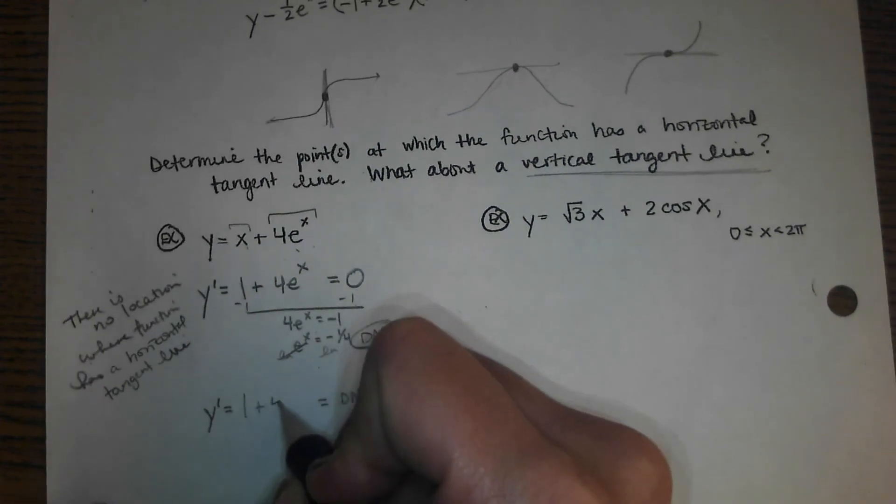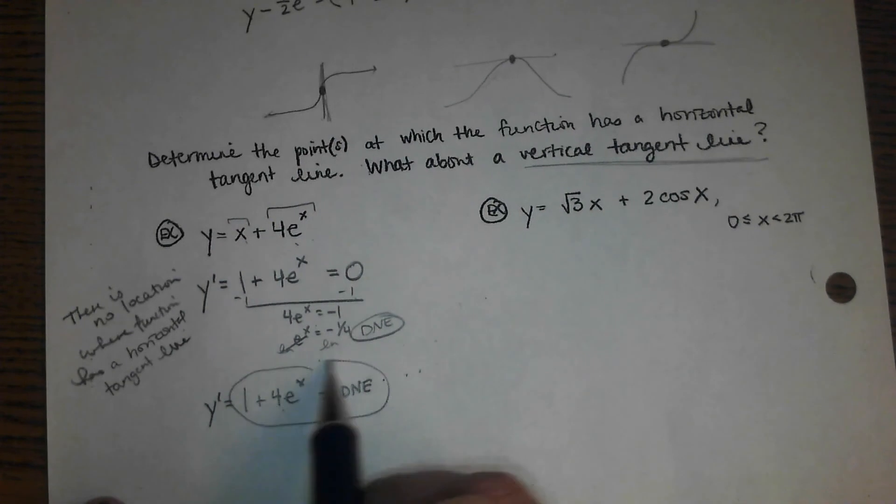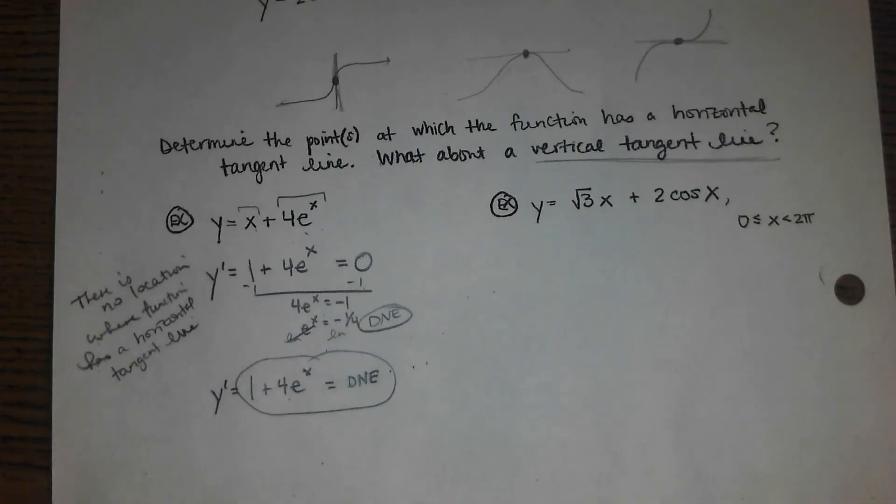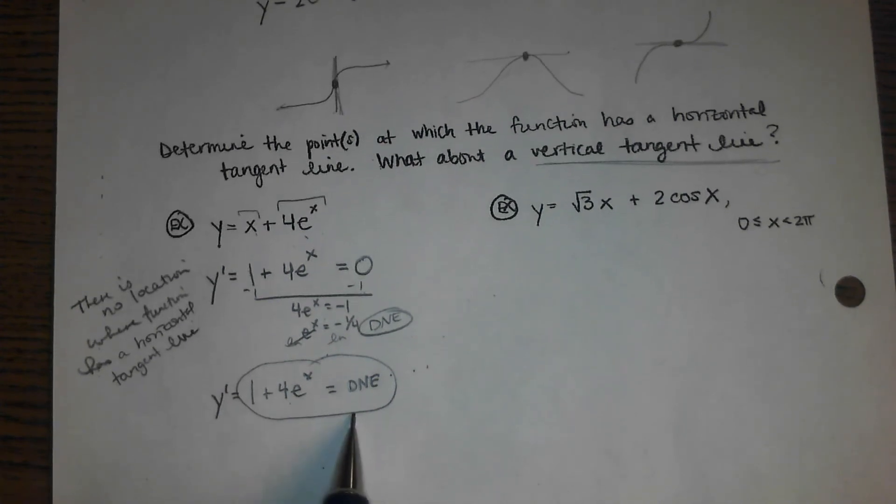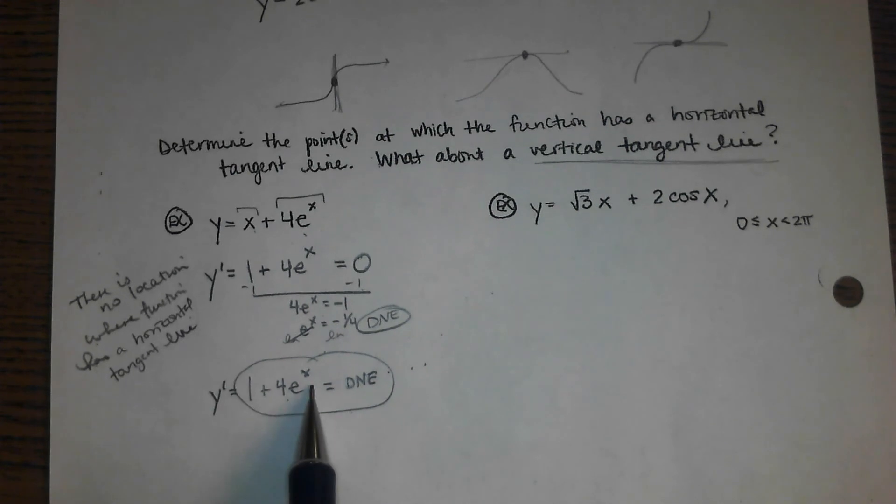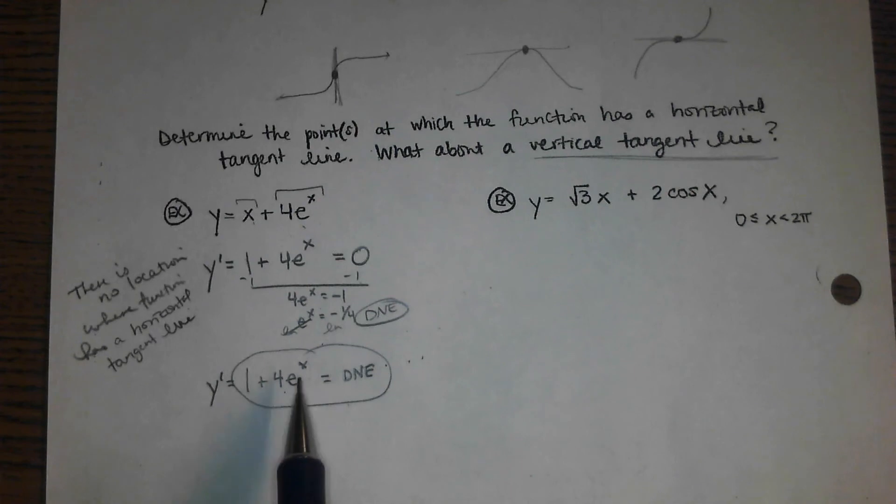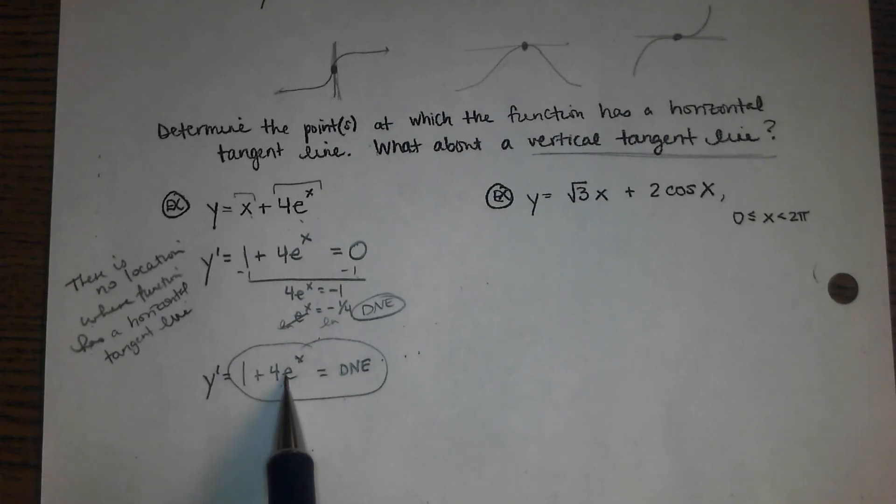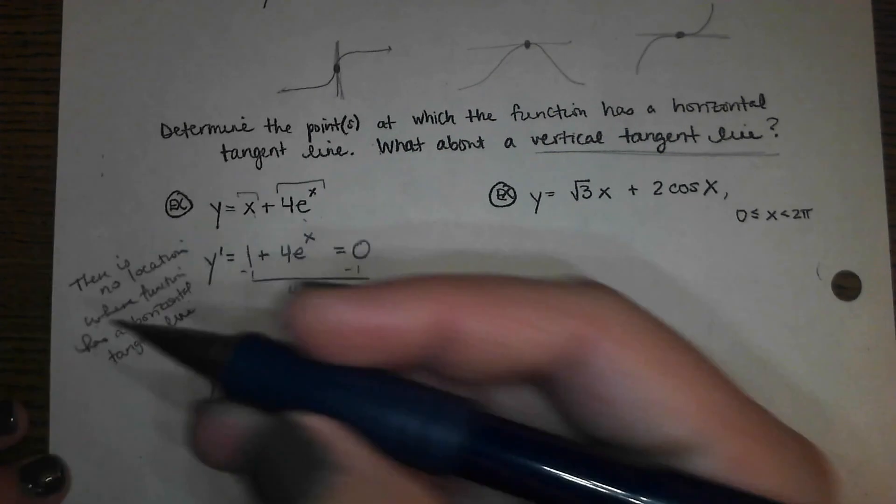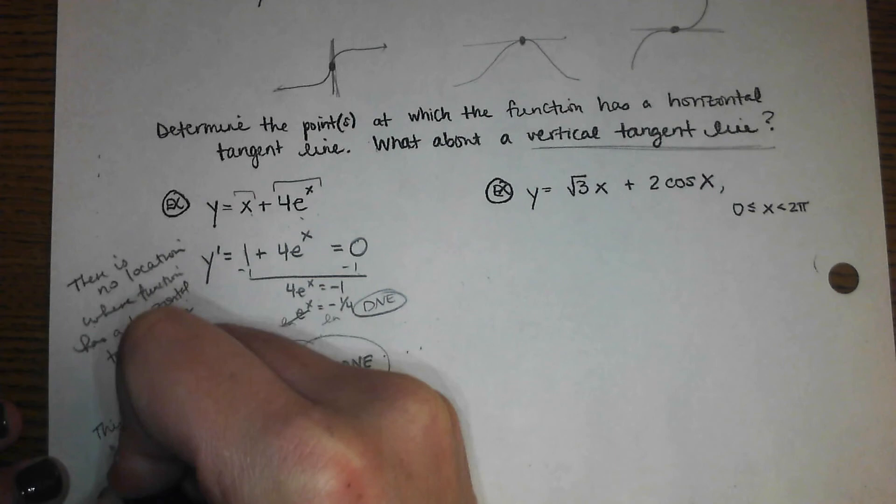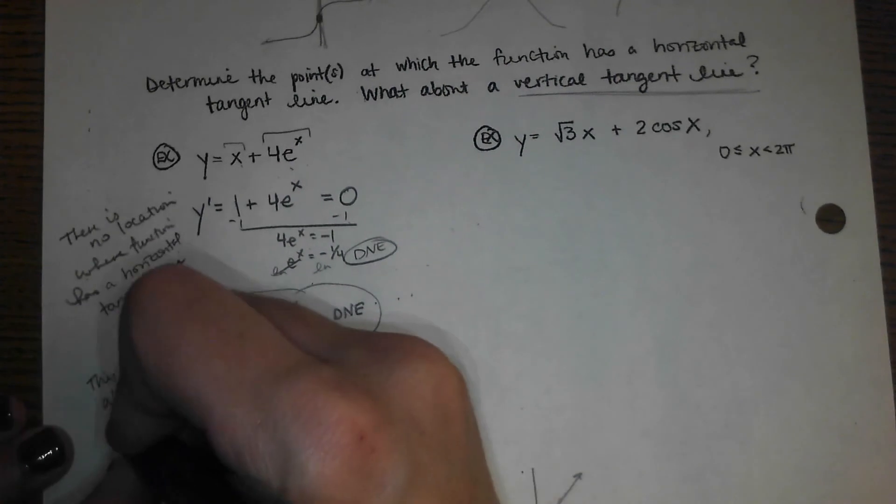So there is no location. So this says there is no location where function has a horizontal tangent line. And on the second part we already found the derivative so we don't need to do it again. What x values would make this not exist? What x values would make this undefined? You can raise e to a negative power. What x values would you plug in? 2.7 to what power would be a problem? Maybe kind of a trick question. Because there is no problem at all. So this will always exist. So from that we gather there is also no vertical tangent line.